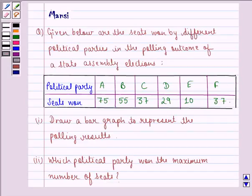Hello and welcome to the session. My name is Mansi and I am going to help you with the following question. The question says, given below are the seats won by different political parties in the polling outcome of a state assembly elections.